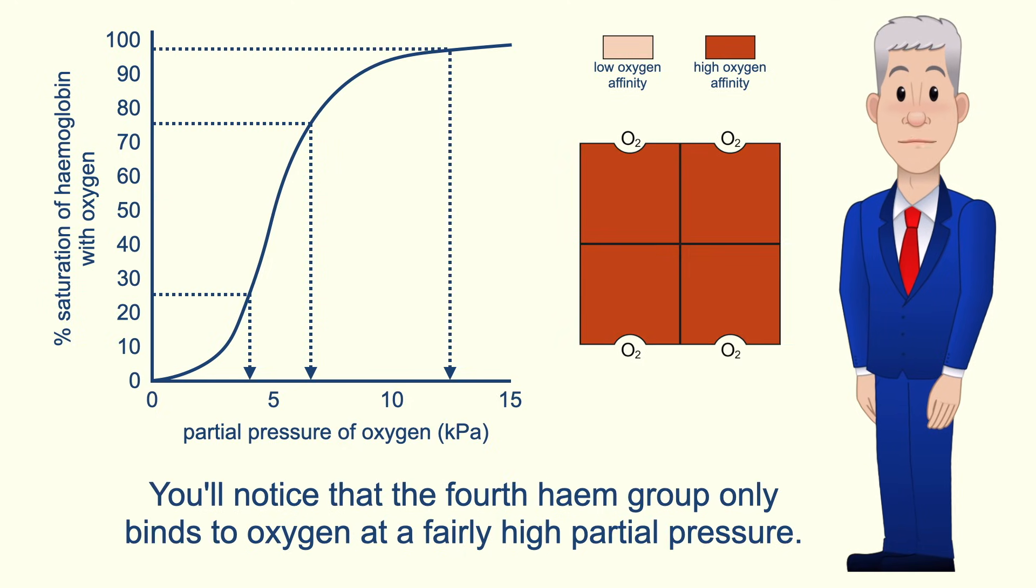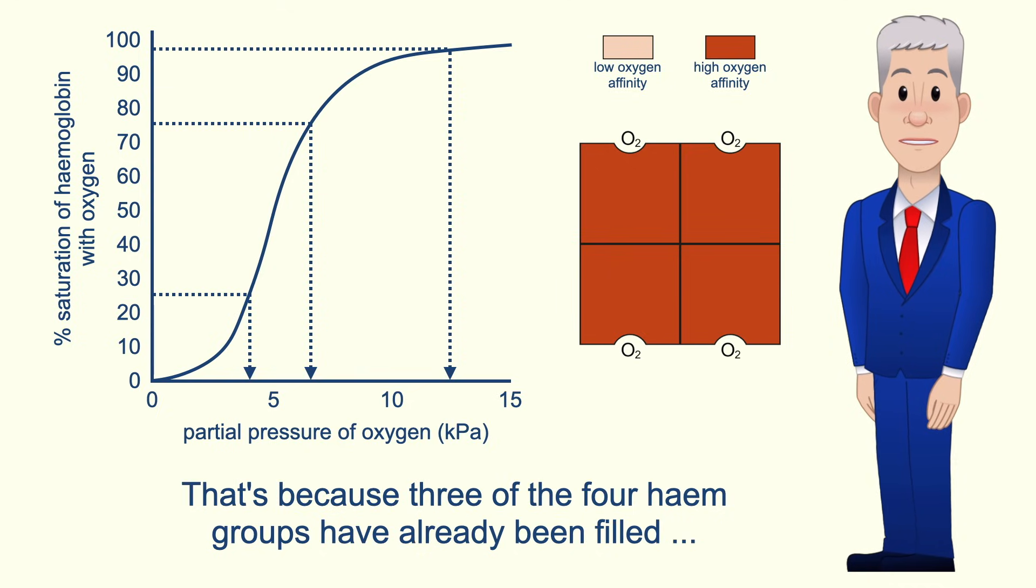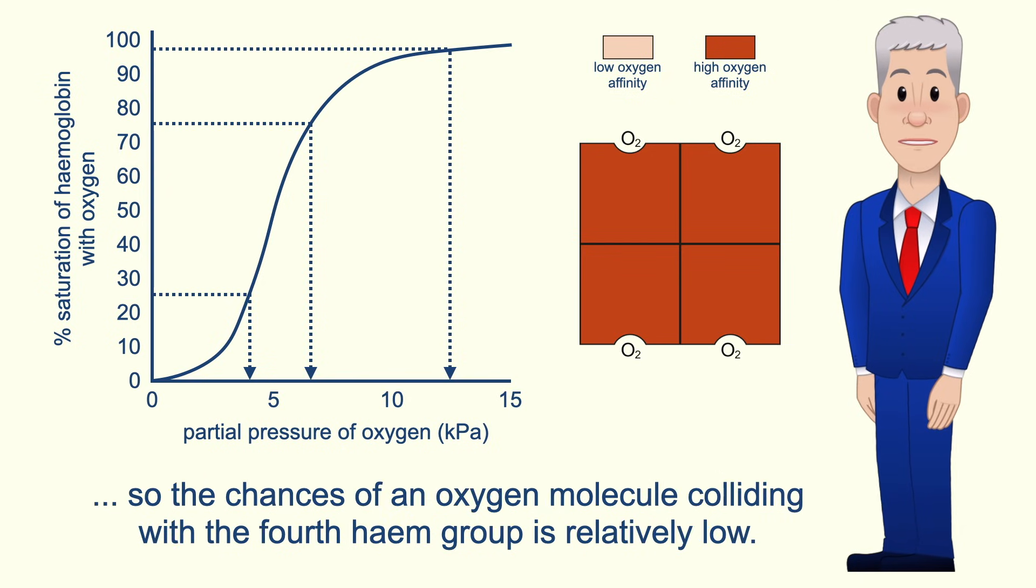You'll notice that the fourth haem group only binds to oxygen at a fairly high partial pressure. That's because three of the four haem groups have already been filled, so the chances of an oxygen molecule colliding with the fourth haem group is relatively low.